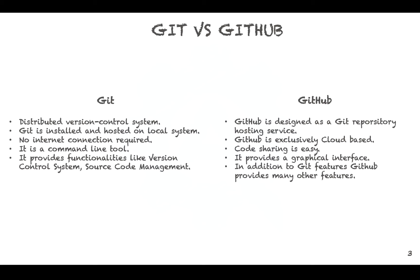Git is mostly a command line tool. Git doesn't provide a GUI for doing all the operations. As discussed, Git is a version control system and provides source code management.